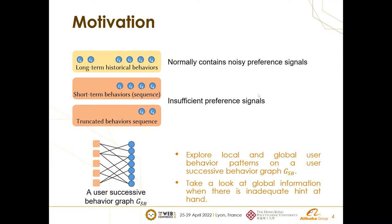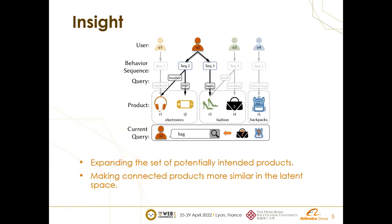In our work we decided to form a user successive behavior graph, where we connect each sequence with the products it contains. In such a way we can explore both local and global user behavior patterns on a user successive behavior graph — it's like taking a look at global information when we don't have adequate hints at hand. The SBG, namely the Successive Behavior Graph, addresses these information problems in the following two aspects.